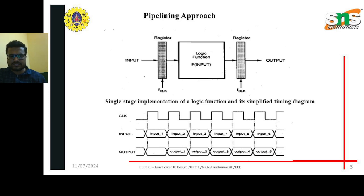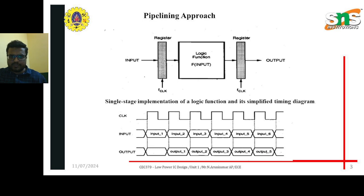Initially, clock pulses are given to the register, and the clock pulses are generated based on the input signals. If inputs — input 1, input 2, input 3 — are applied based on the clock pulses, then the output is generated only on the second pulse, because of the process of fetching the information.